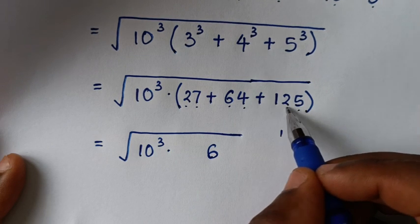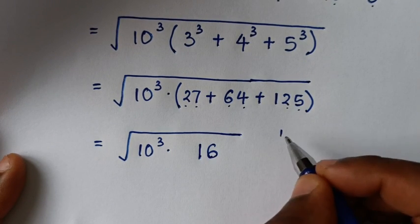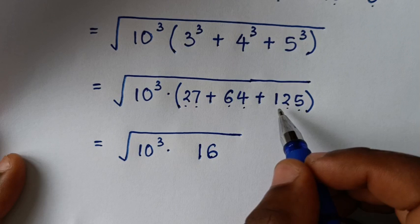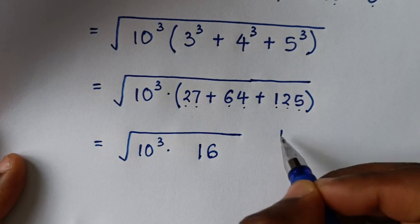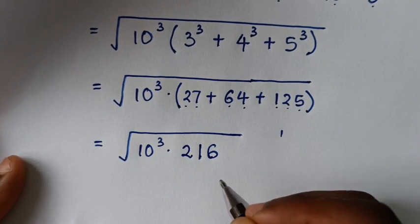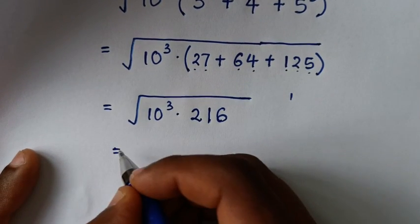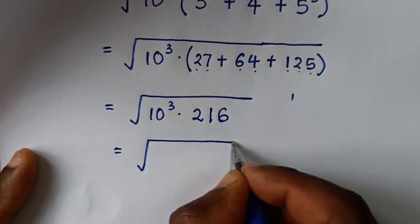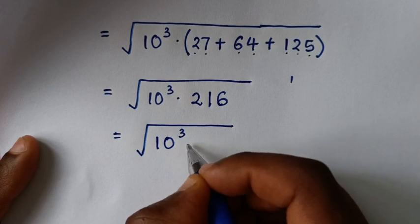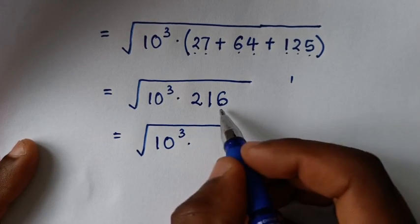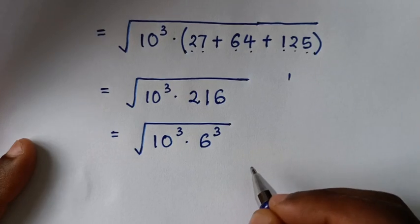Adding 27 plus 64 plus 125: 8 plus 2 is 10, carry 1; 10 plus 1 is 11, carry 1; 1 plus 1 is 2. The total is 216. So it will be equal to the square root of 10 to the power 3 times 216, and 216 is 6 to the power 3.